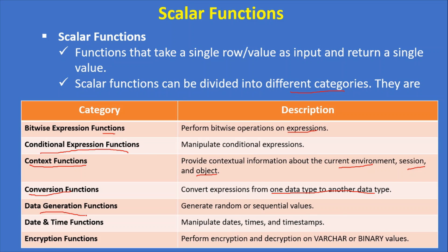The fourth category is data generation functions, which generate random arrays and sequential values. For example, if you want to generate a random number, Snowflake provides random functions under the data generation functions category.